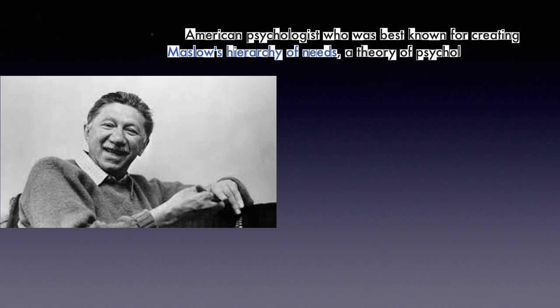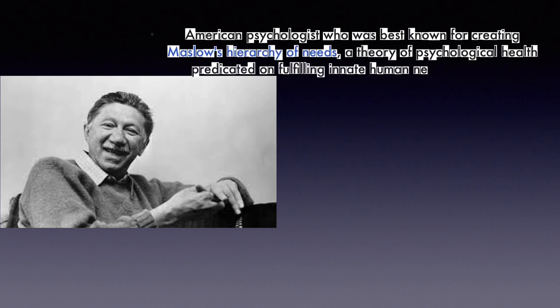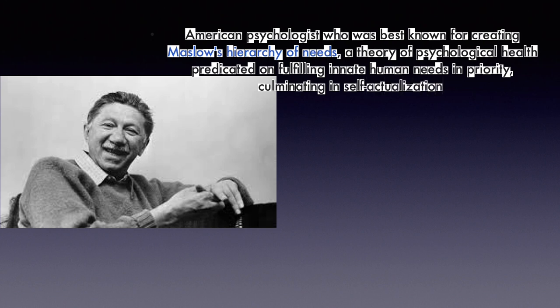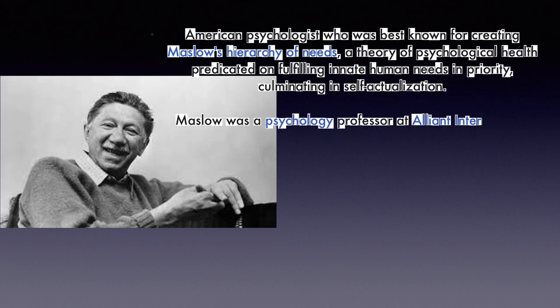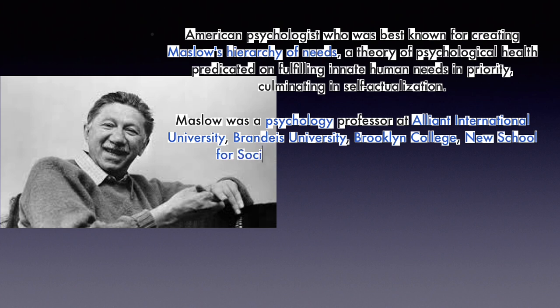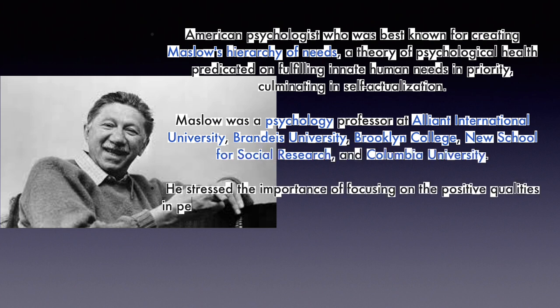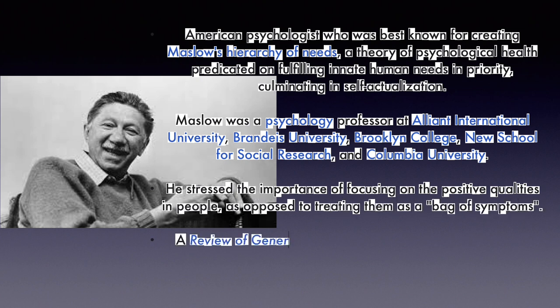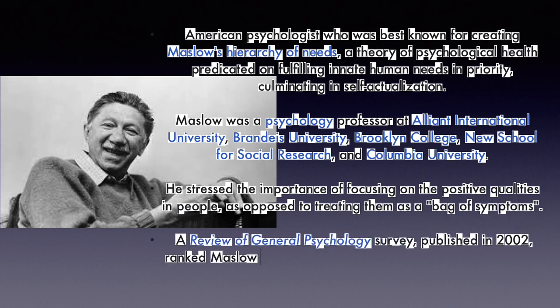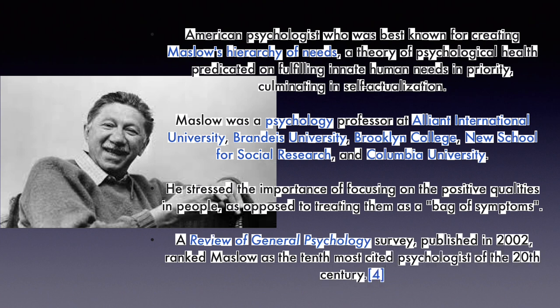Maslow's Hierarchy of Needs is a theory of psychological health predicated on fulfilling innate human needs in priority, culminating in self-actualization. Maslow was a psychology professor at Alliant International University, Brandeis University, Brooklyn College, New School for Social Research, and Columbia University. He stressed the importance of focusing on the positive qualities in people, as opposed to treating them as a bag of symptoms.